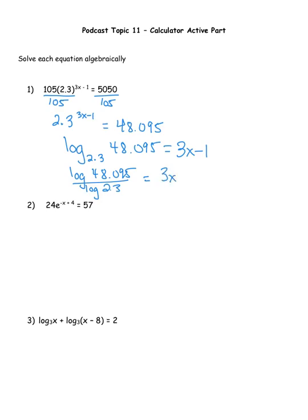On my calculator I'm typing log(answer) — that's 2nd then negative — close the parentheses, then divide by log(2.3). TI-84 users, just use that one button, but use the full answer value, not just 0.095. When I hit enter I get 4.650186996, which equals 3x − 1. Adding 1 and then dividing by 3 gives x equals 1.88.